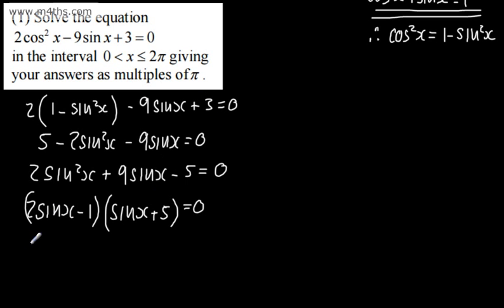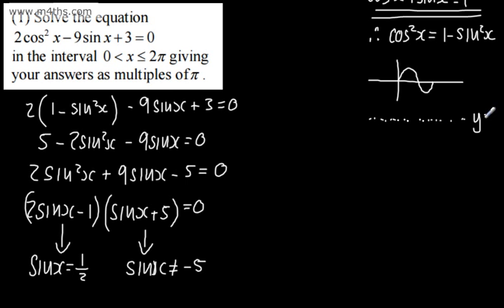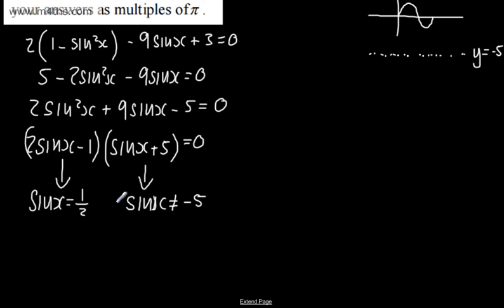Considering the two factors: from (2sinx - 1) = 0, sinx = 1/2. From (sinx + 5) = 0, sinx = -5. But sinx can never equal -5 — the sine curve has a maximum of 1 and a minimum of -1. It would never intersect the line y = -5, so there are no real solutions from that factor.